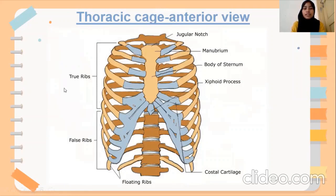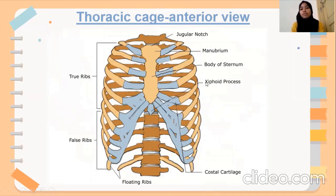You can see here — this is a true rib and this is a part of the false ribs. This is a floating rib, and you can see the xiphoid process and also the costal cartilage, and the body of the sternum here. You can also see the body of the sternum here, and this is the manubrium.